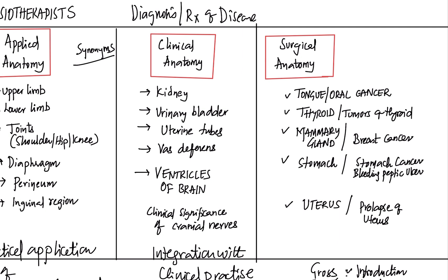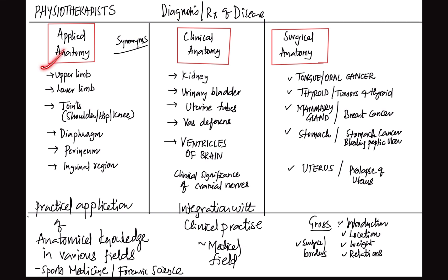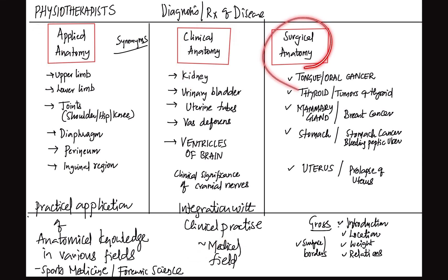So they might ask anything, but the answer is the same. When you understand the actual terminology, it makes it easier. If they ask applied anatomy, don't just mention the clinical part — also mention it is used in sports medicine, physiotherapy, and prostheses. If they ask clinical anatomy, stick to the clinicality — how it is useful medically. Surgical anatomy focuses mainly on the anatomy relevant to surgery and how it is integrated when doing surgery. In summary: applied anatomy is for physiotherapists, clinical anatomy is mainly for medical doctors, and surgical anatomy is for surgeons.